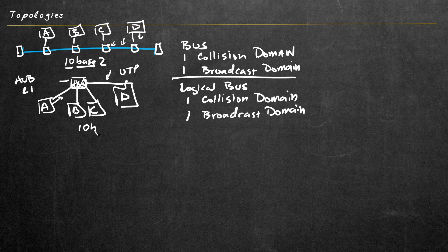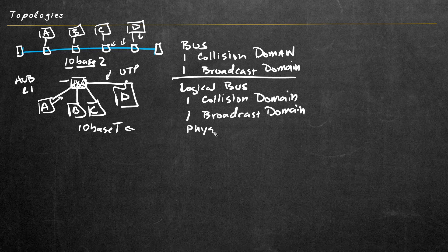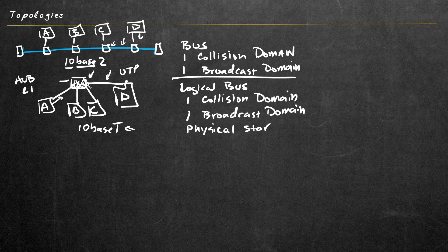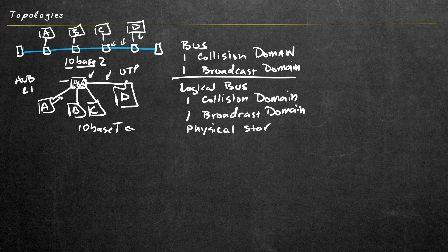So far we have a physical bus, and with the hub we have a logical bus. But if we look at the hub as a center point, it's actually wired as a physical star, with the hub being the center and the hosts connected with unshielded twisted pair making up the rest of the star. If somebody asked what this network topology is, you'd have to say it's physically a star but logically a bus — you can see how it gets a little tricky. So this topology is a physical star but still a logical bus using a hub at the center.